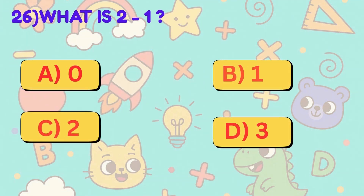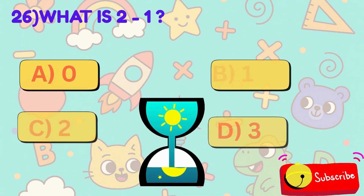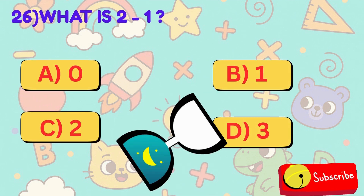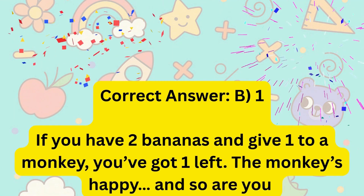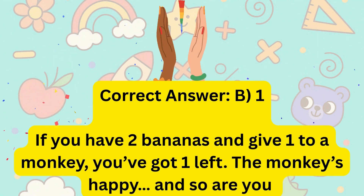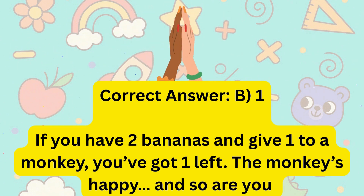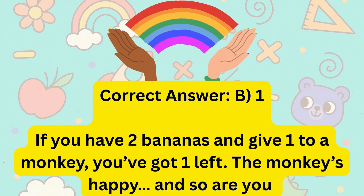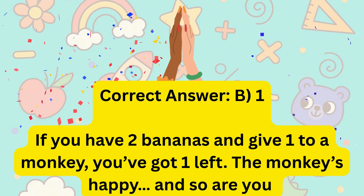26. What is 2 minus 1? Is it A, 0, B, 1, C, 2, or D, 3? Correct answer is B, 1. If you have 2 bananas and give 1 to a monkey, you've got 1 left. The monkey's happy and so are you.